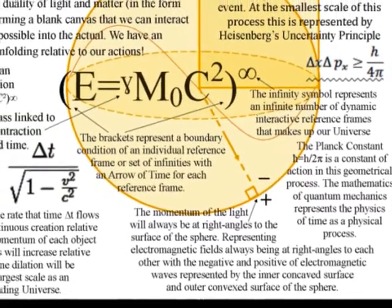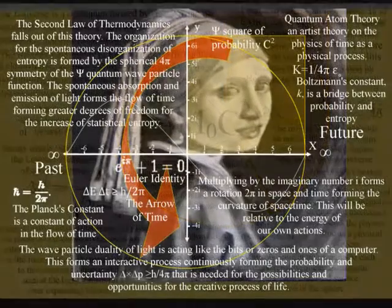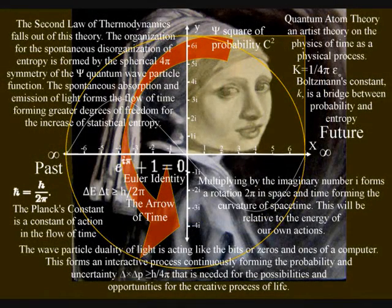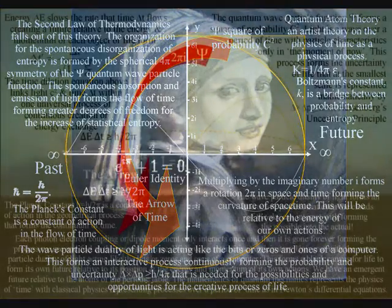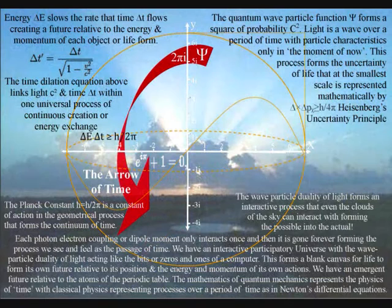Nothing has greater organization or lower entropy than a sphere. Light photon energy from the sun cascades down forming greater degrees of freedom for increasing entropy or disorganization.